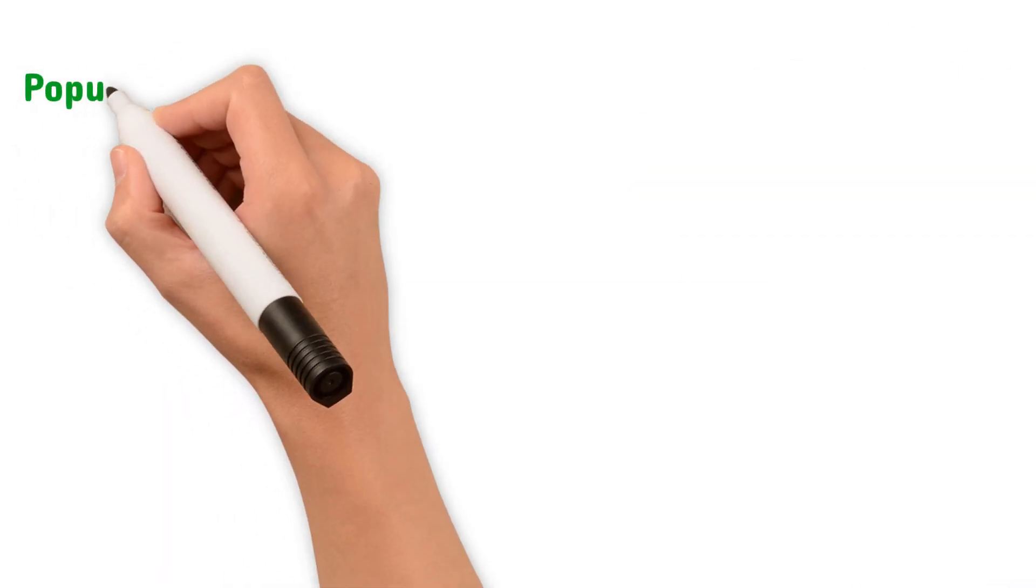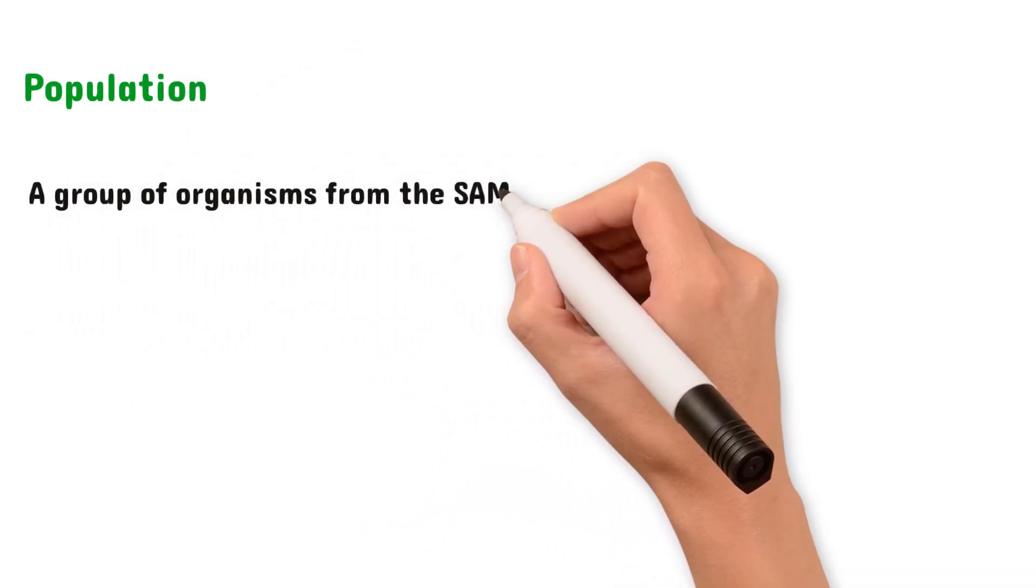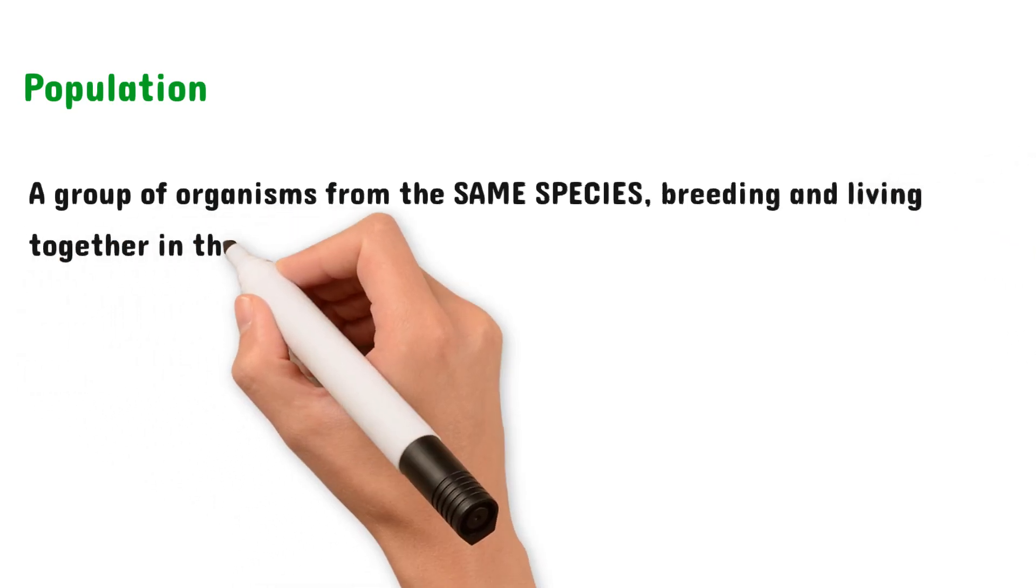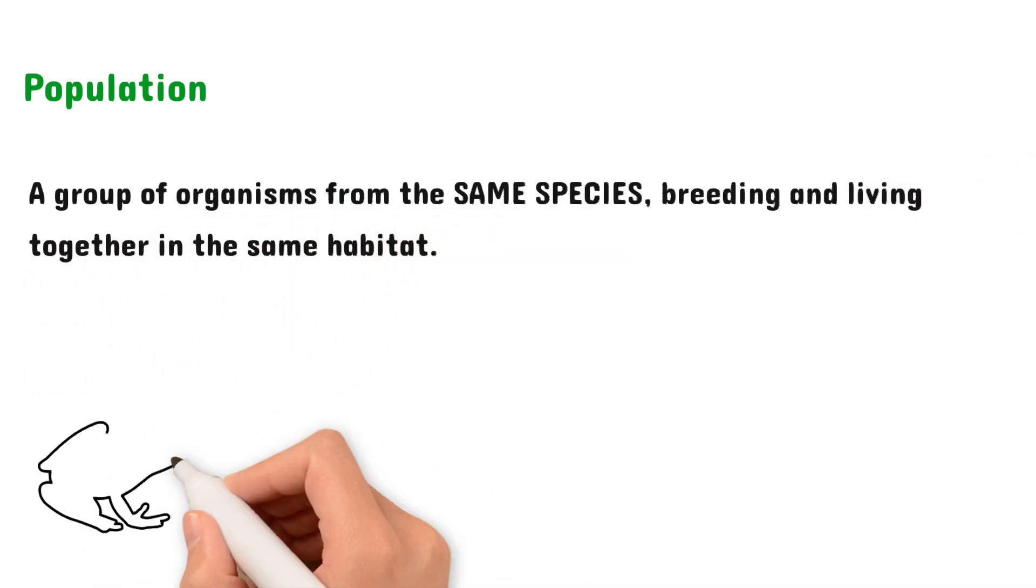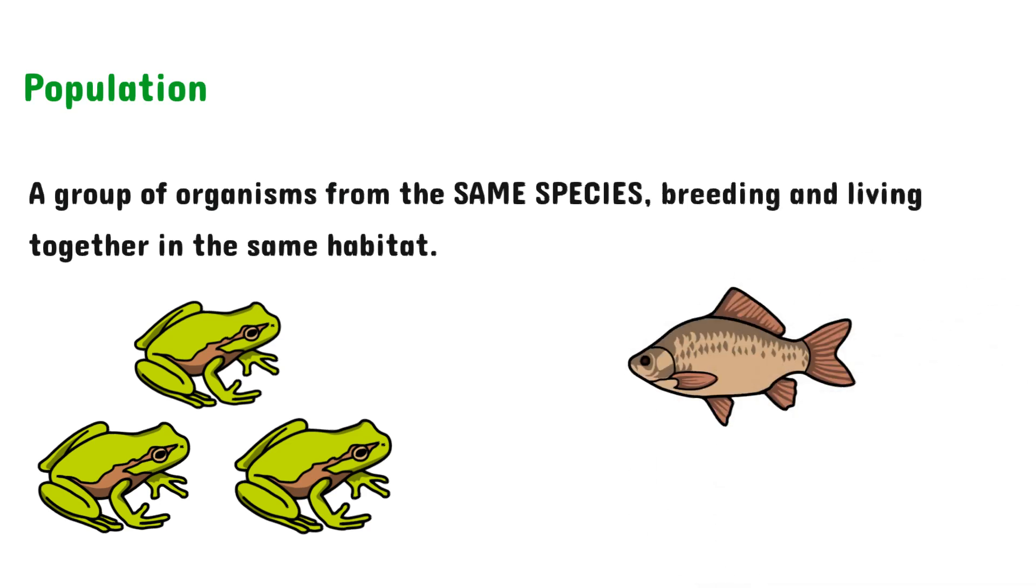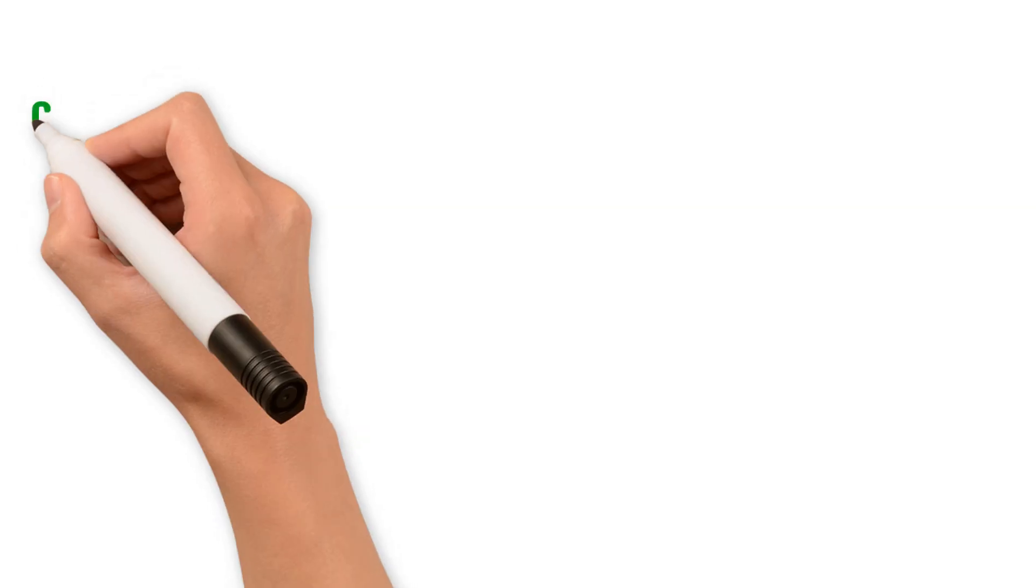The next term you have to remember is population. This is defined as a group of organisms from the same species breeding and living together in the same habitat. So let's take the frog from before. A group of those frogs from the same species that live and breed together in that lake are considered a population. Now there can be other populations in that lake. For example, a group of fish from the same species that breed and live together. It's just important that you remember that a population is made up of the same species.